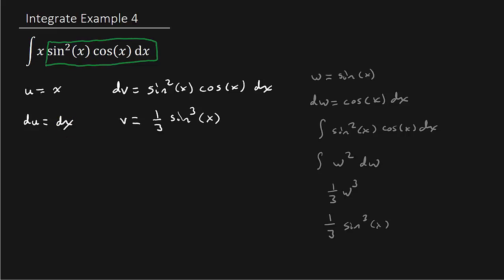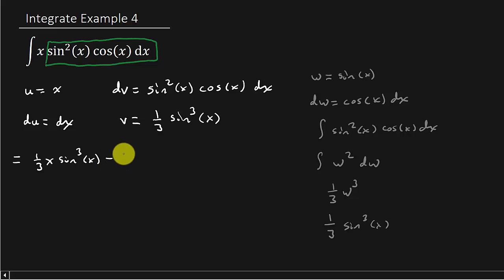Alright, so that is going to give me x times one-third sine cubed x. So that's going to be one-third x sine cubed x minus. And then I'm going to do one-third integral sine cubed x dx.